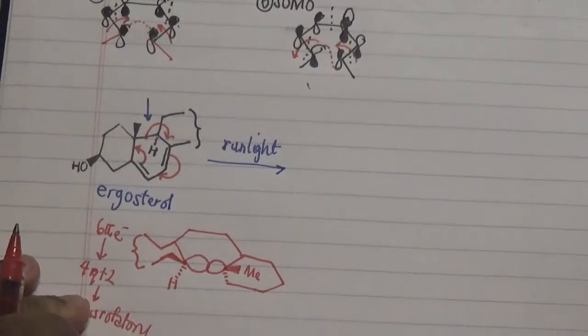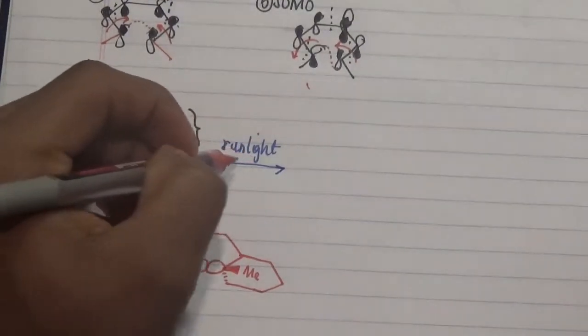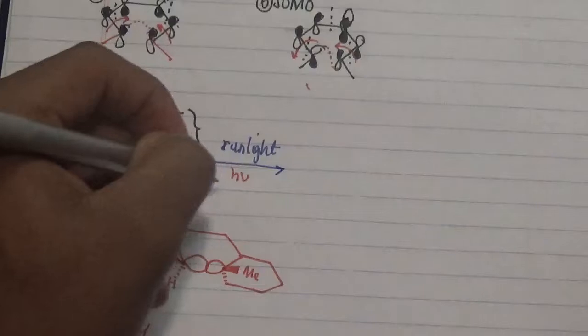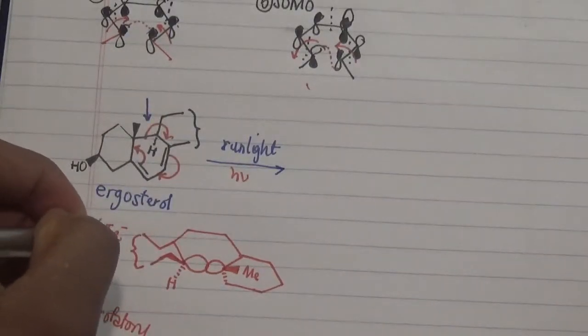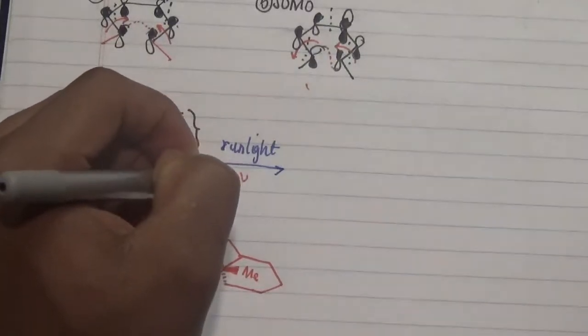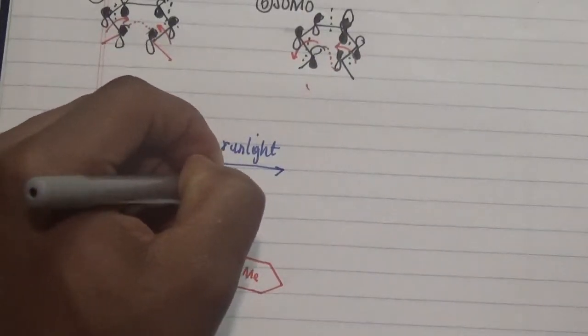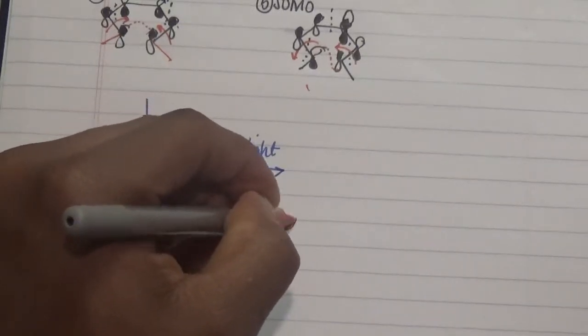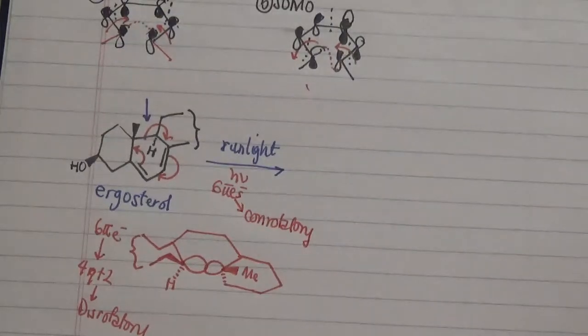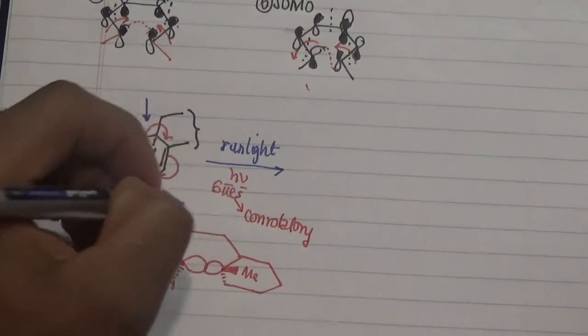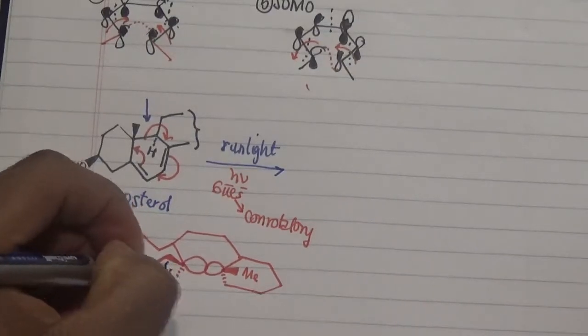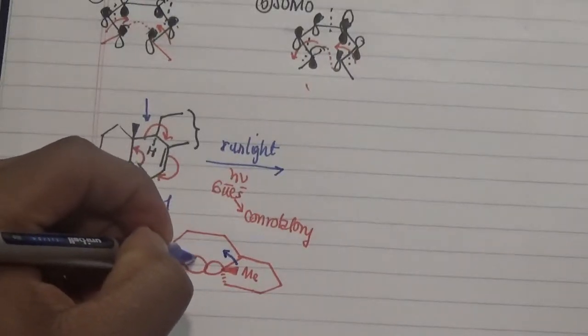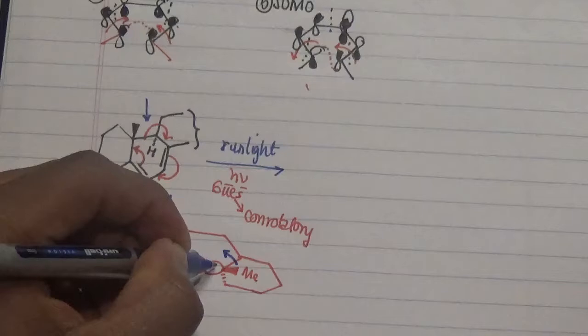However, since we are targeting sunlight which is a photochemical process, the photochemical process tells us that 6 pi electrons will actually perform a conrotatory process where we have this segment moving in the same direction as this segment, causing this to move up and this moving down.